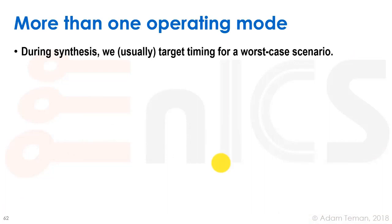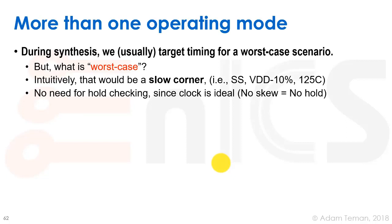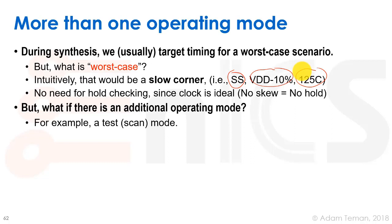There's more than one operating mode. During synthesis we usually target timing for a worst-case scenario, but what is worst case? Intuitively, the worst case is when our chip comes out slow — the slow-slow corner, where our PMOS and NMOS were fabricated with high VTs so they're slower, we have IR drop making our supply voltage lose about 10%, and we traditionally have a high temperature, even though that may not be true nowadays with temperature inversion. We didn't need to check hold since the clock was ideal, and with no skew there's really no hold problem.